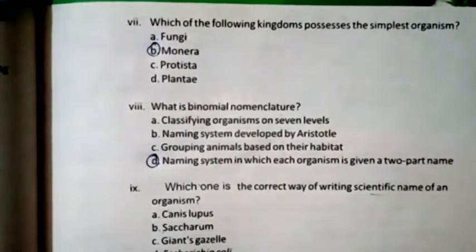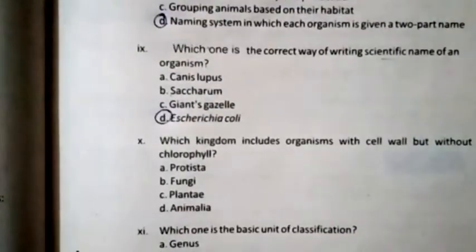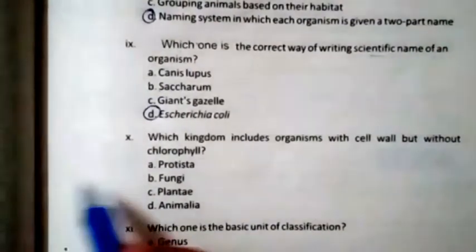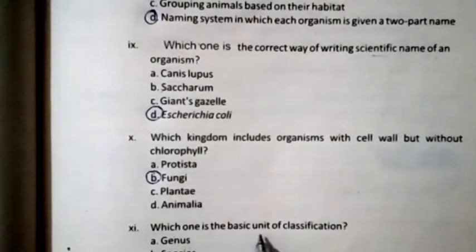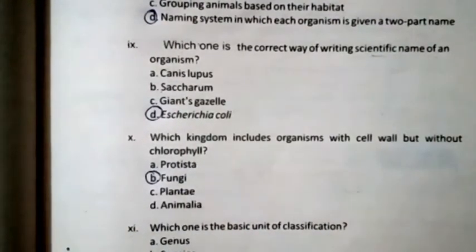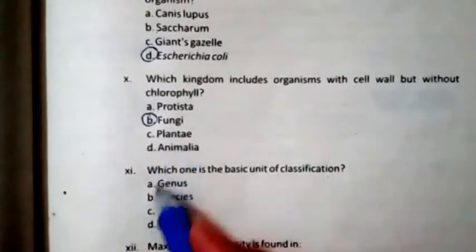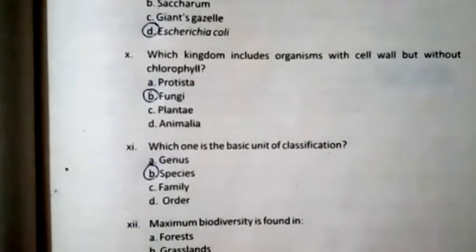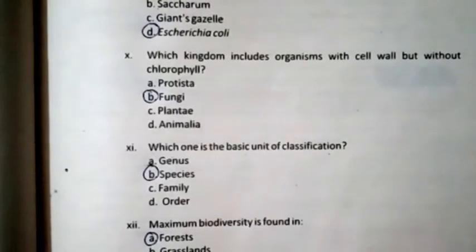Question nine: Which one is the correct way of writing the scientific name of an organism? The right option is D — Escherichia coli. Question ten: Which kingdom includes organisms with cell wall but not Protista? The right option is B — Fungi. The basic unit of classification is species.